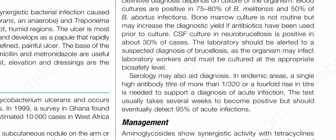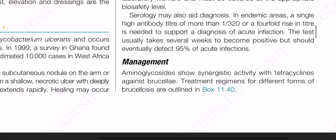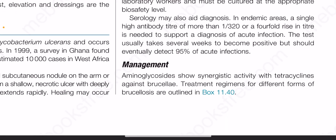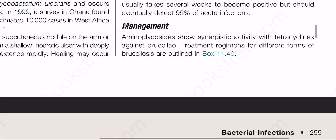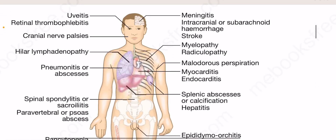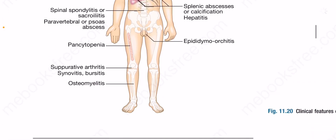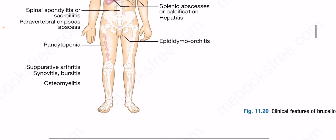or a fourfold rise in titer is needed to support a diagnosis of acute infection. The test usually takes several weeks to become positive but should eventually detect 95 percent of acute infections. For management, aminoglycosides show synergistic activity with tetracyclines against Brucella. Treatment regimens for different forms of brucellosis are outlined in the relevant reference table.